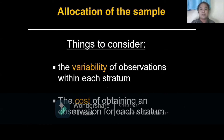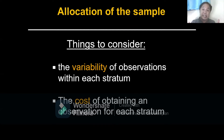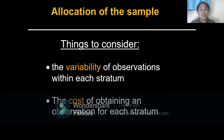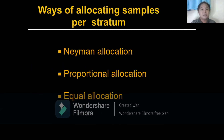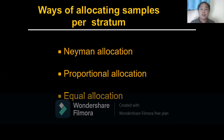When allocating sample sizes, things to consider include: the variability of observations within each stratum, and the cost of obtaining an observation for each stratum. The ways of allocating samples per stratum are Neyman allocation, proportional allocation, and equal allocation.